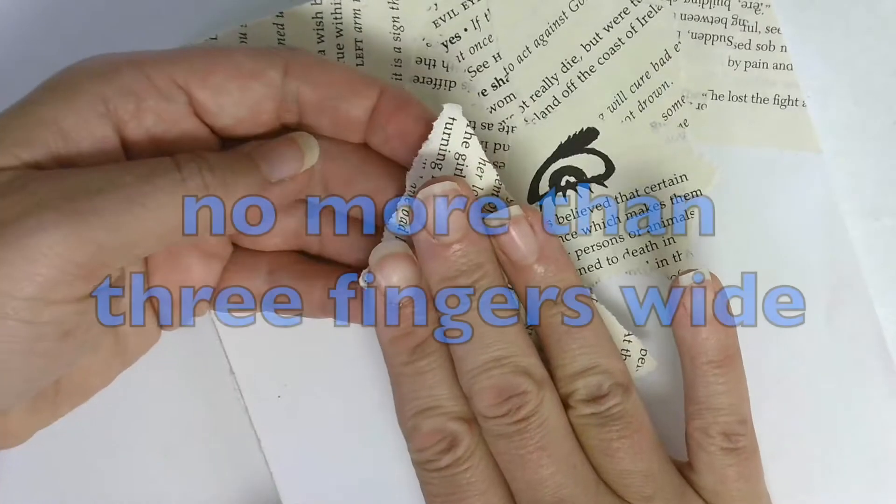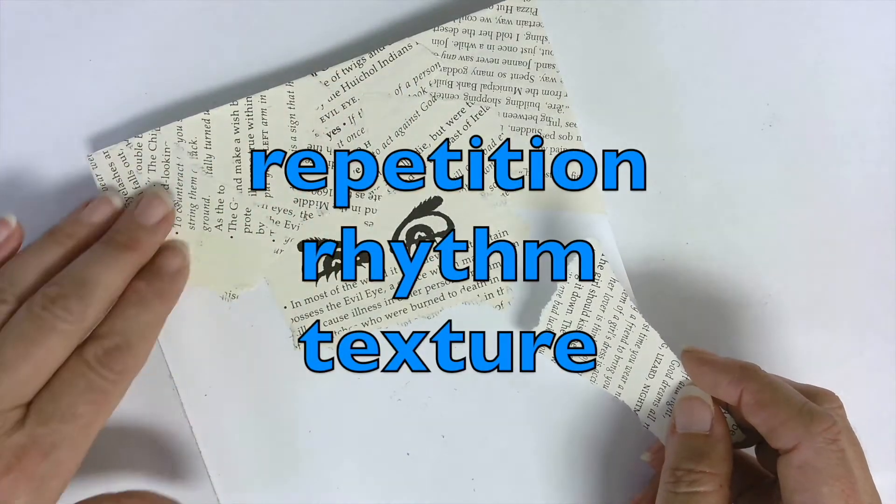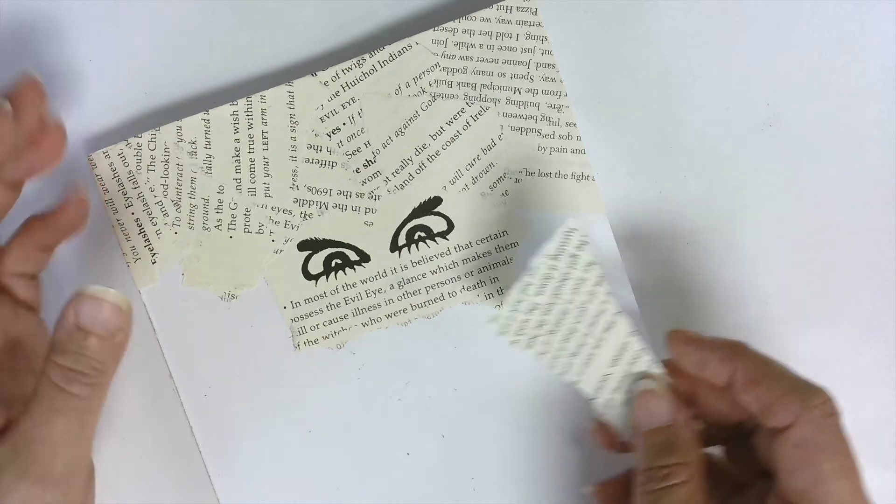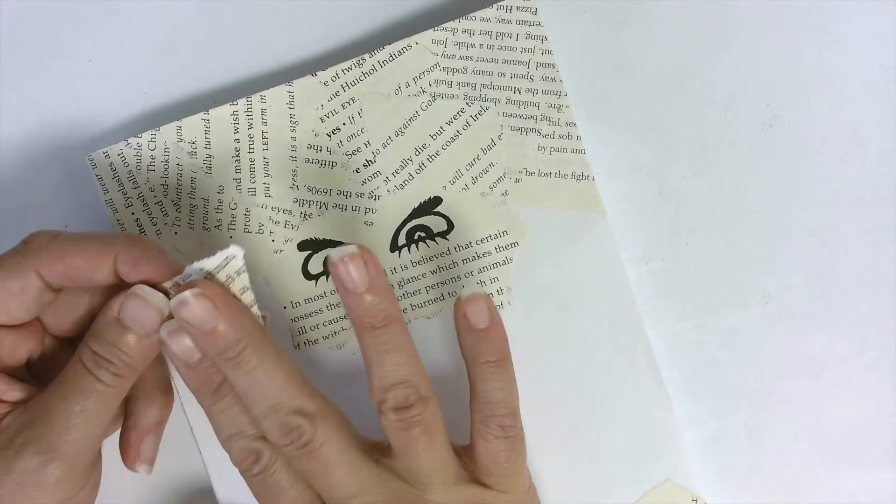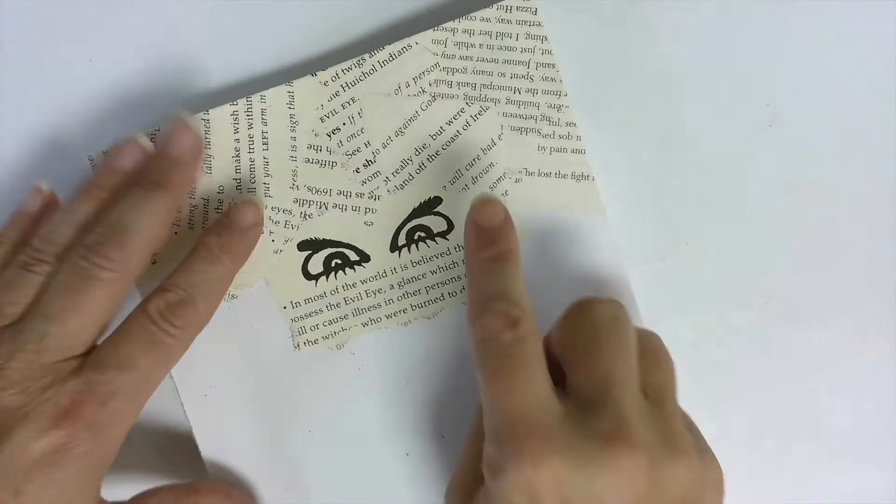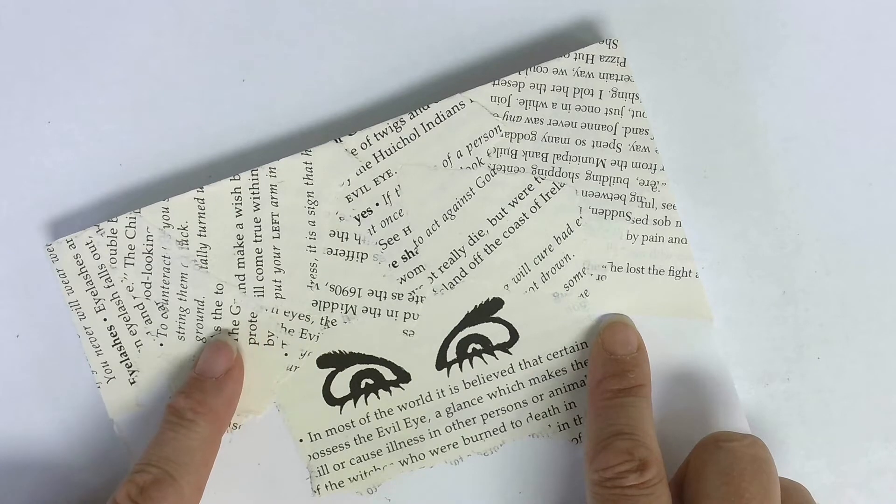When you tear your paper, you don't want it to be any wider than three fingers because we want to have a lot of repetition and rhythm in our torn paper. So if you just had six big pieces, it's not going to have that. So don't go wide. I would say this is probably two fingers wide. You could go up to three but not more than that.